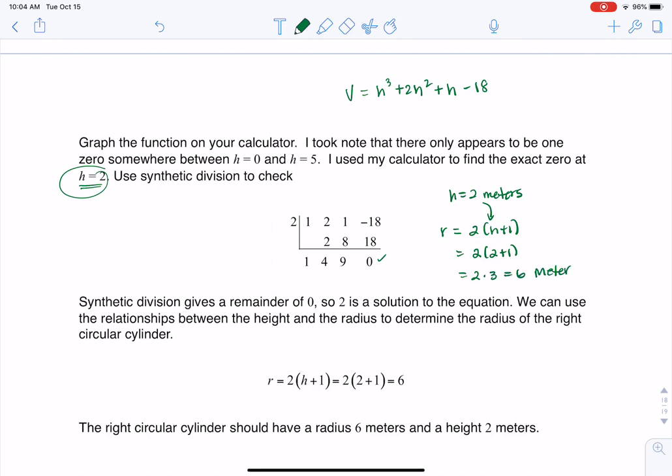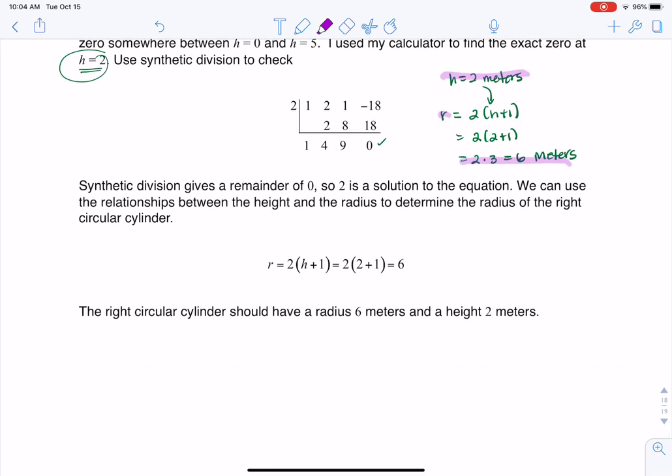So there are the dimensions of my right circular cylinder, right? I have a height of 2 meters and a radius of 6 meters. And that's why you see that showing up on my answer there.